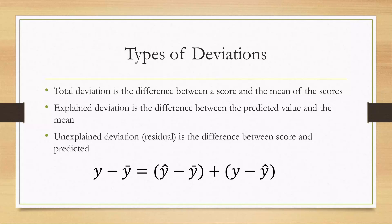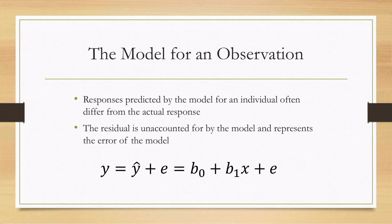In the last video we looked at the different types of deviations and talked about partitioning total deviation from the mean into two parts: one part we can explain with the explanatory variable X, and one part we cannot explain — the unexplained deviation, also known as the residual. Responses predicted by the model for an individual often differ from the actual response, meaning we often have a residual that is unaccounted for by the model and represents the error of the model.